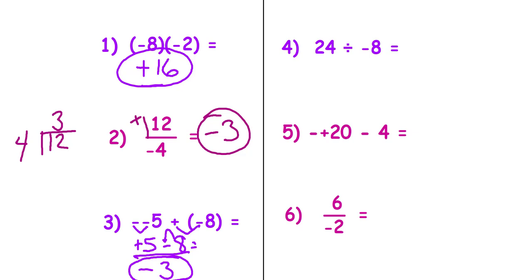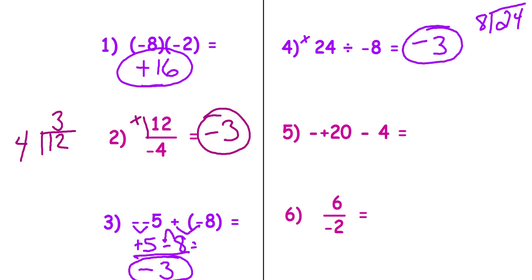Now try 4, 5, and 6 on your own — pause the video. Number 4: no hand holders. Do you see anything that looks like multiplication or division? Yes. You're in the middle part of your notes. Are the signs the same or different? They are different. Therefore the answer is going to be negative, and 24 divided by 8 is 3. So the answer is negative 3.